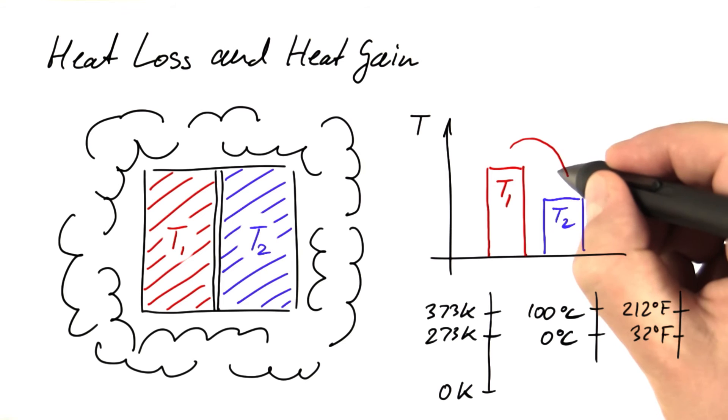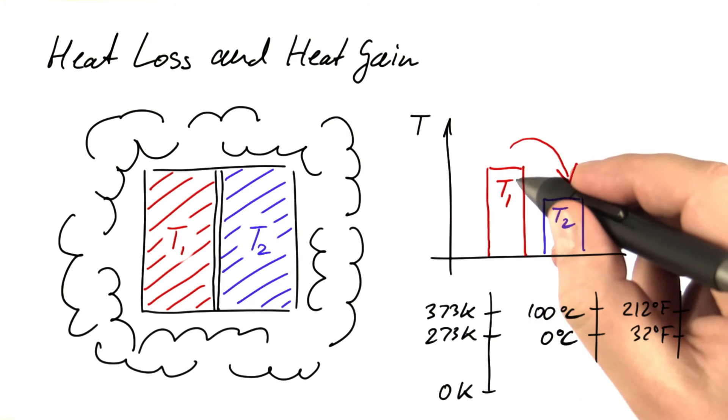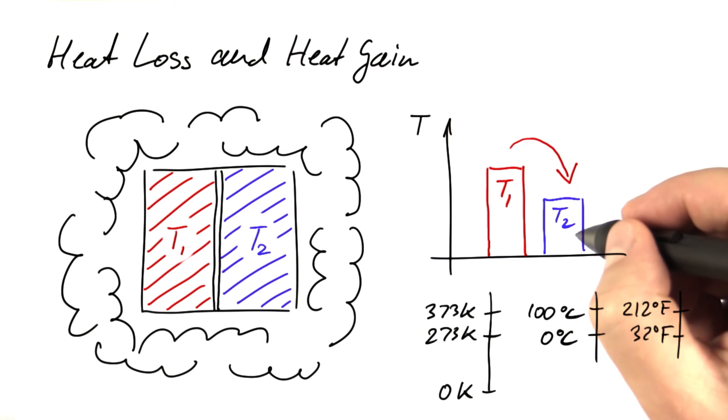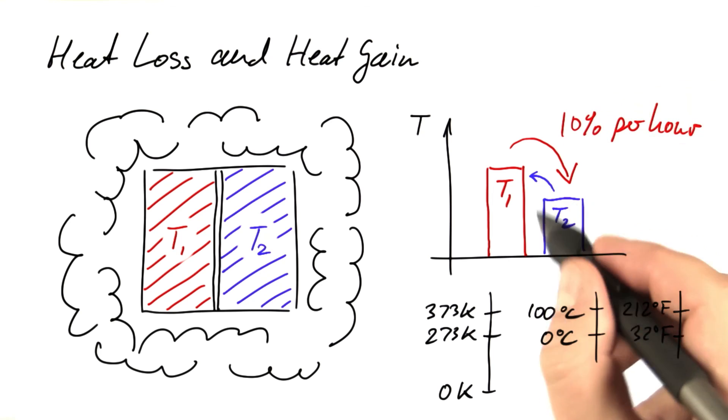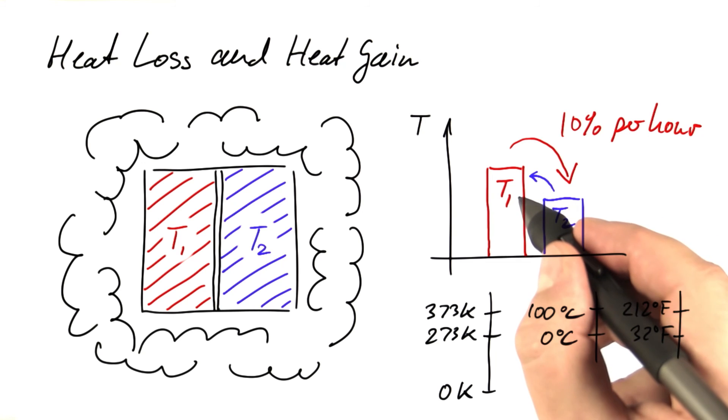To model the system, we could say that, for instance, every hour, 10% of the energy content of the left compartment flows to the right compartment and the same percentage per hour would flow from the right compartment to the left compartment.